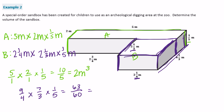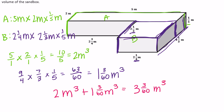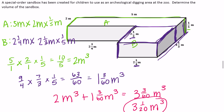63/60 equals 1 and 3/60 meters cubed. Then our final step is to put those two together: 2 meters cubed plus 1 and 3/60 meters cubed equals 3 and 3/60 meters cubed. We can reduce this — 3/60 reduces to 1/20 — so the volume of the composite figure is 3 and 1/20 meters cubed.